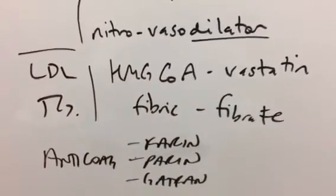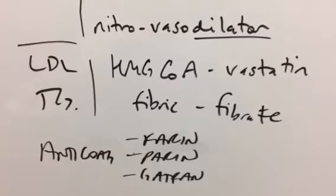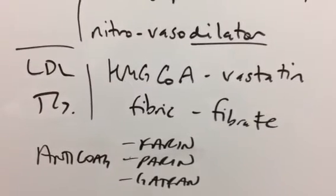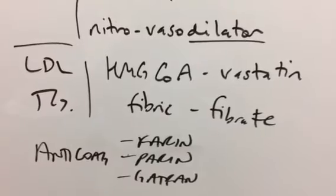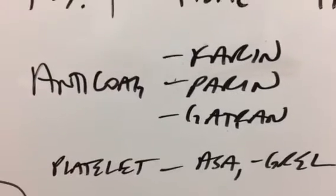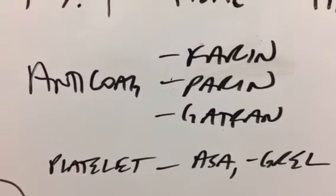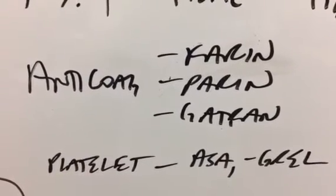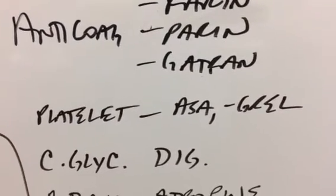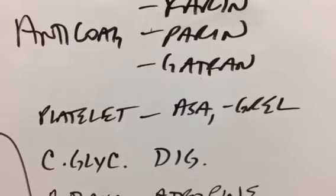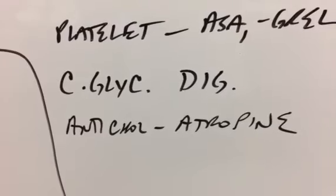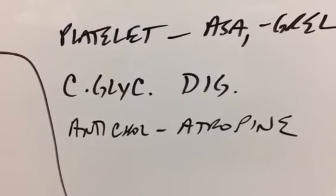The LDL, so HMG-CoA reductase, usually end in V-A-S-T-A-T-I-N, so be careful. Nystatin, the antifungal is not an HMG-CoA. And then the triglycerides, so fibric acid derivatives, the fibrate stem. The anticoagulants, warfarin, heparin, enoxaparin, dabigatran, all of these have their own stems. The antiplatelets, aspirin, and then something like clopidogrel, which is Plavix. And then the cardiac glycoside, digoxin, and the anticholinergic, atropine for emergencies.